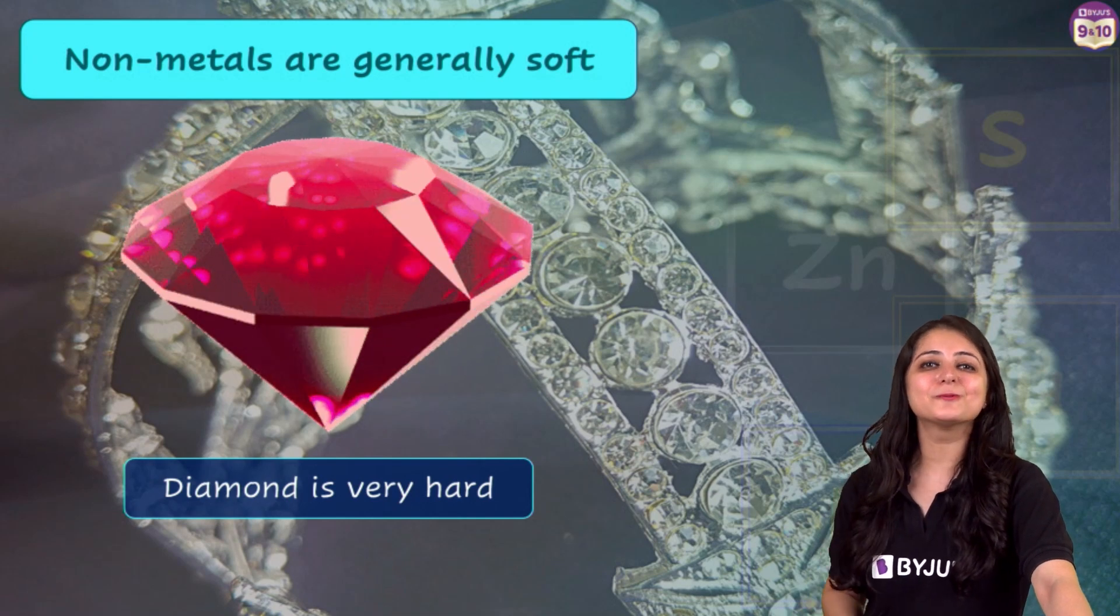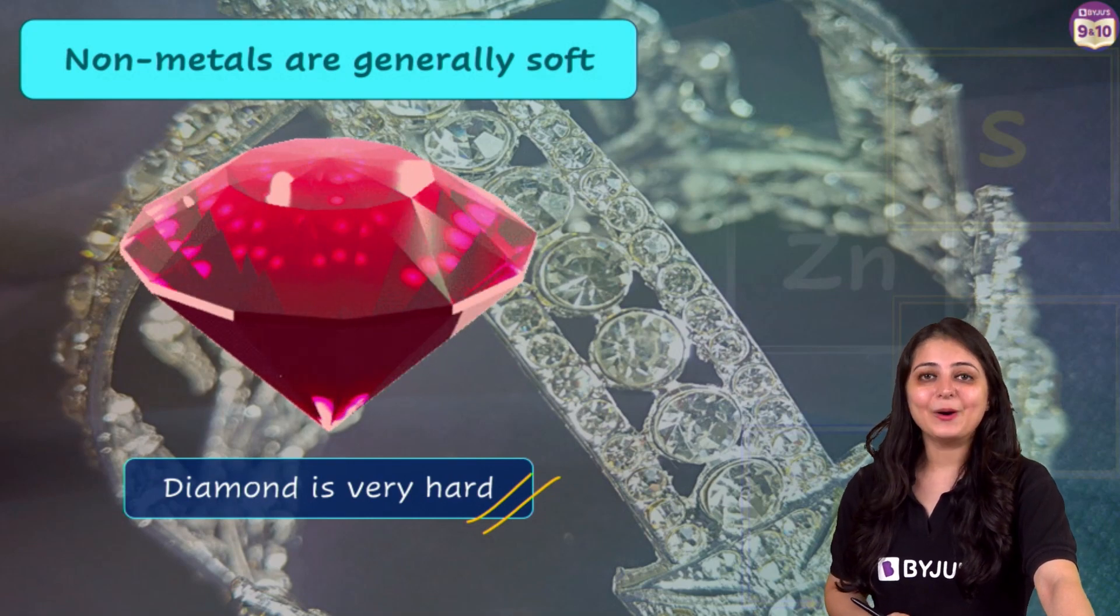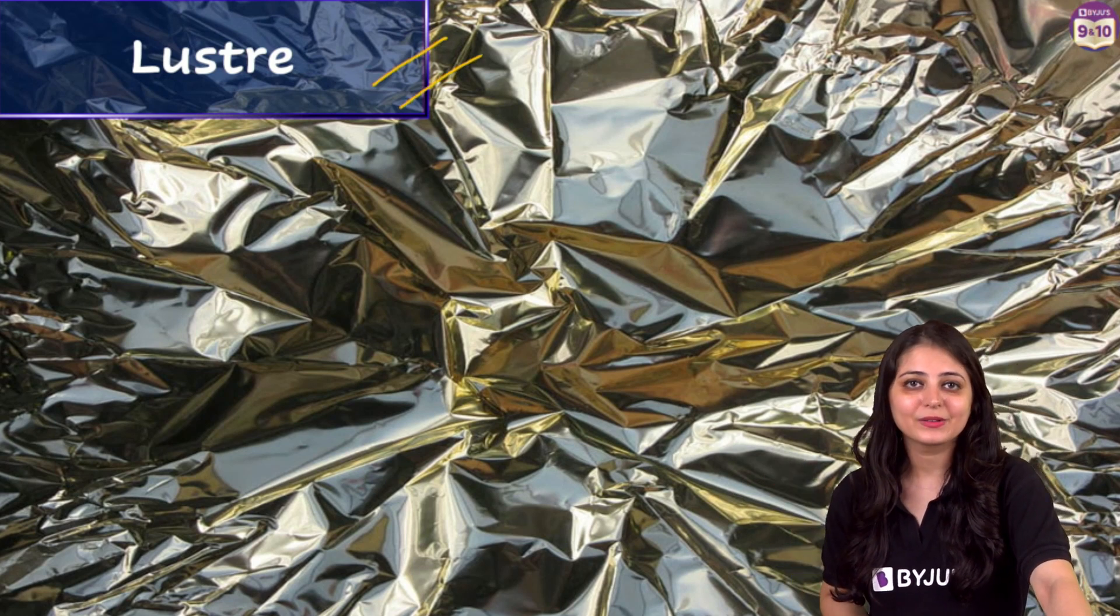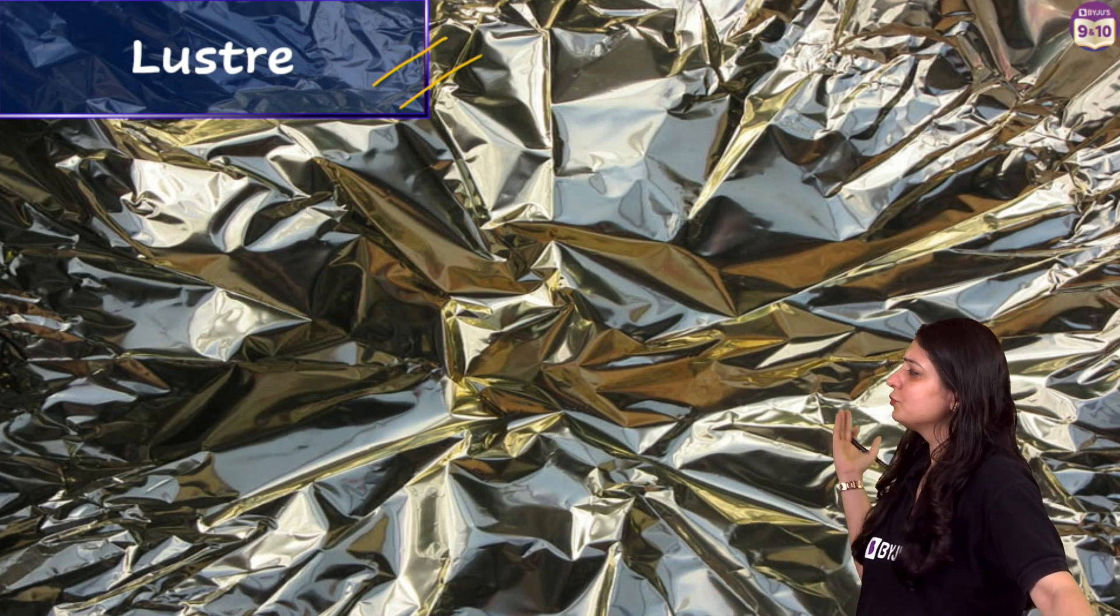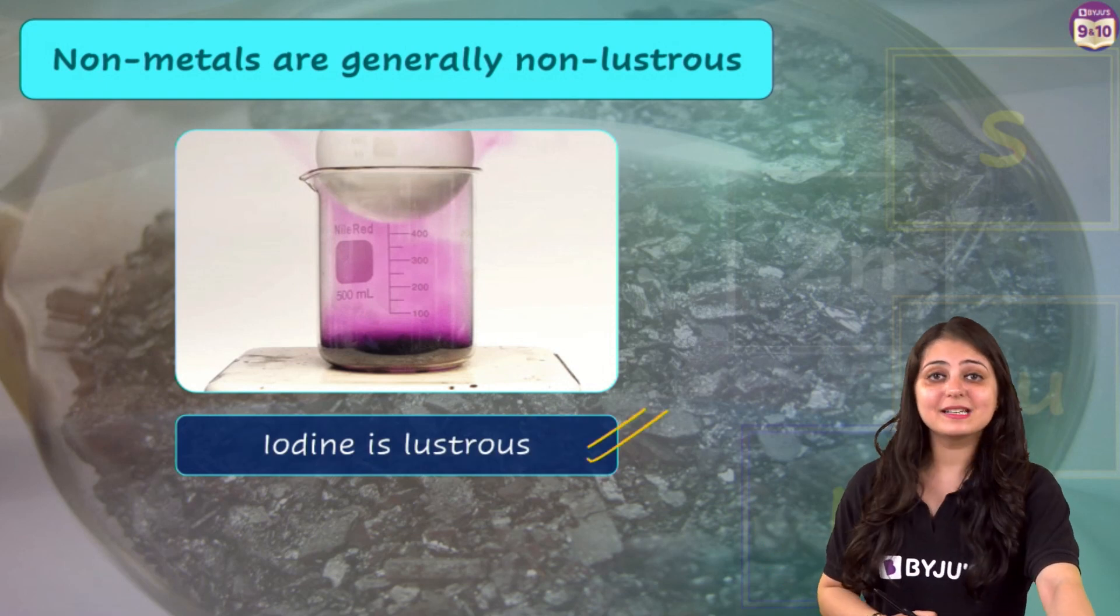Let's move on to the next one. The third one is luster - that's a shiny surface. Now generally speaking, metals are lustrous and non-metals are non-lustrous. They have a dull surface. But having said this, there is a lustrous non-metal and that is iodine. So iodine is a non-metal but it is lustrous, it has a shiny surface.